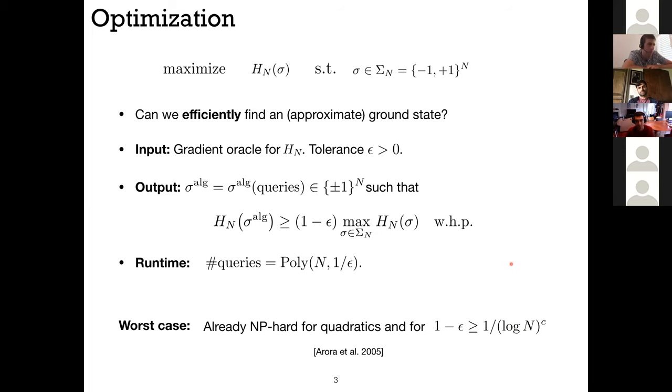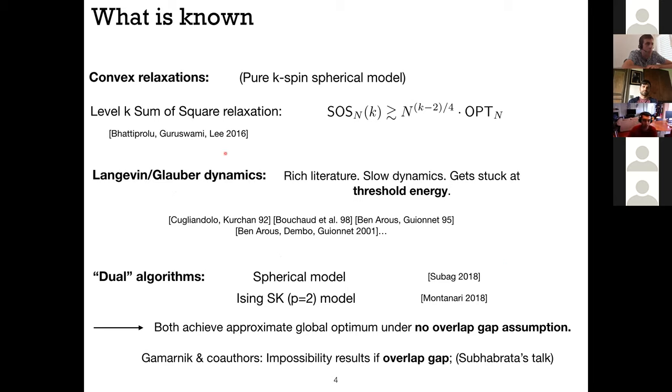So what is known about this problem? You can look at convex relaxations, which is a general theme that you can try to replace a non-convex problem with a convex one. If you consider this pure k-spin spherical model, which is a k-body interaction, like it's a monomial of size k, and instead of being on the hypercube you relax the constraints and just are on the sphere, so you constrain the two norm of the vector sigma to be square root n, and you can consider this level k sum of squares relaxation and try to analyze its behavior or at least the value that it's achieved. It turns out that it has a value that is larger than the optimum by a factor that diverges with n polynomially. So it's no good.